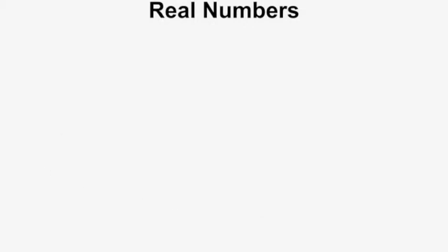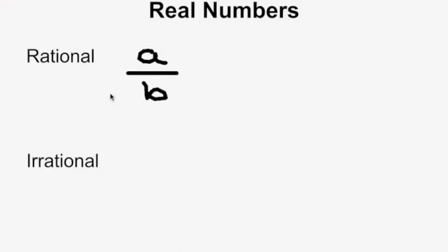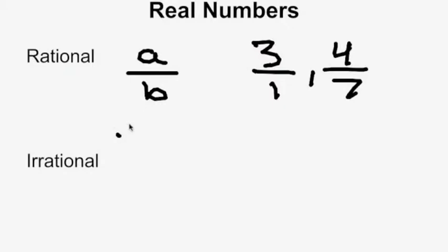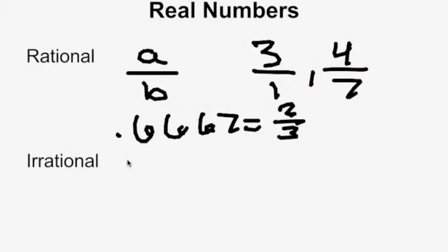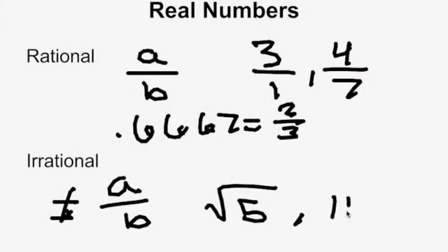Real numbers break down further into rational numbers and irrational numbers. Rational numbers are any real number that can be expressed in a over b form — that is, as a ratio between two numbers. For example, 3 can be written as 3 over 1, fractions like 4 over 7, and even decimals like 0.6667 can be written as 2 over 3. Irrational numbers cannot be put into a over b form; numbers such as the square root of 5 and pi are irrational.